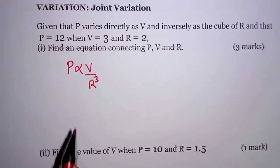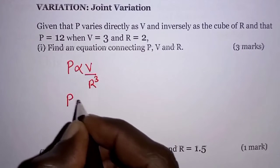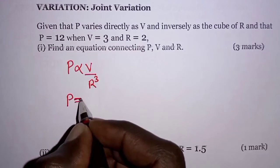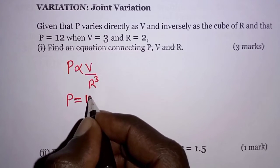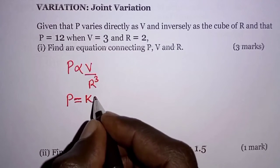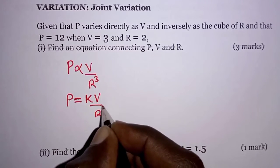Then from here we will replace this symbol with an equal sign, so we say P is equal to, and when we introduce the equal sign, we equally introduce the constant K, you can use any letter of choice, times V all over R cubed.